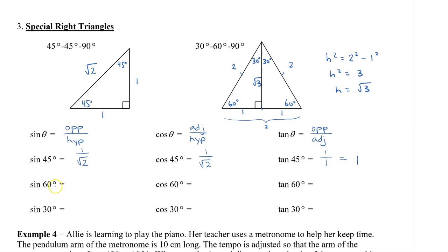Going to the other triangle, sine 60 degrees is our opposite. We're only going to take a look at half of the triangle here. So sine 60 degrees, opposite is root 3, and the hypotenuse is 2.